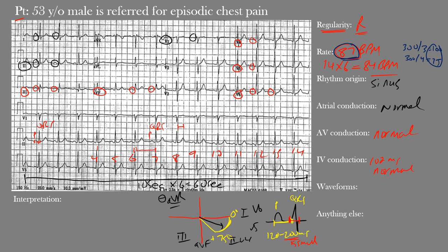For waveforms: the P waves are normal sinus P waves. The T waves are present, asymmetric, and appear normal. The PR segment is not significantly depressed or elevated. The PR and QRS intervals are within normal limits. The ST segment does not appear significantly elevated or depressed anywhere. The QT interval is 360 milliseconds and the QTc corrected for heart rate is 433 milliseconds. No major waveform abnormalities.